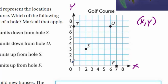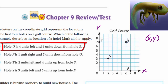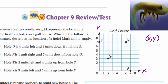So we're dealing with X first. Hole U is right here — it's four units left and four units down from hole S. Well, here's hole S. Is that true? If I'm looking at hole S and thinking: is hole U four units left from hole S? One, two, three, four — but hole S is actually four units left of hole U. So that can't be right — hole U is four units right.